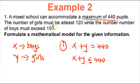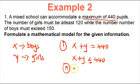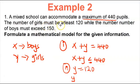The number of girls must be at least 120. To find our second inequality: girls are represented by Y, so Y equals 120 as an equation. Now using the inequality, 'at least' gives us greater than or equal to. So our second inequality is Y ≥ 120.